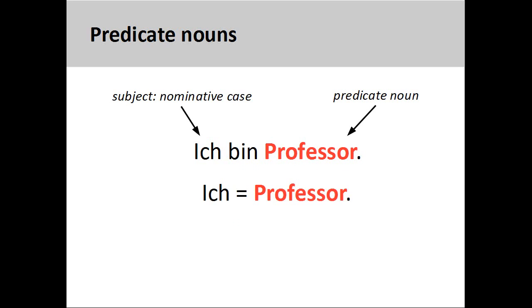It may be useful to think about predicate nouns and adjectives in terms of an equal sign. When a linking verb appears in a sentence, then both sides of the sentence — the subject and predicate — will be in the nominative case.